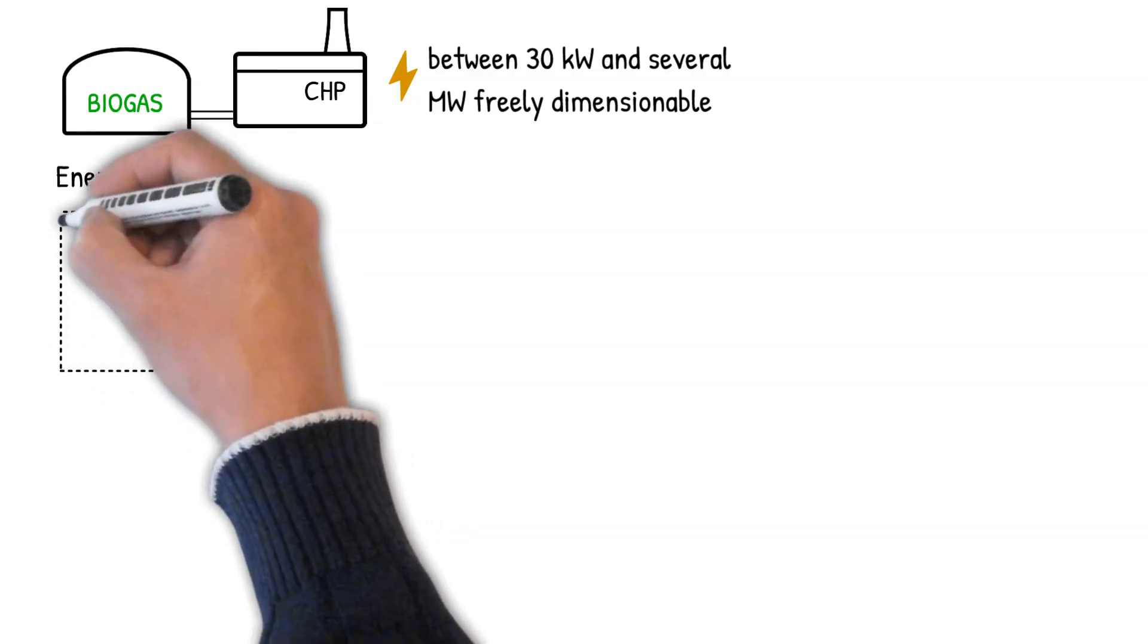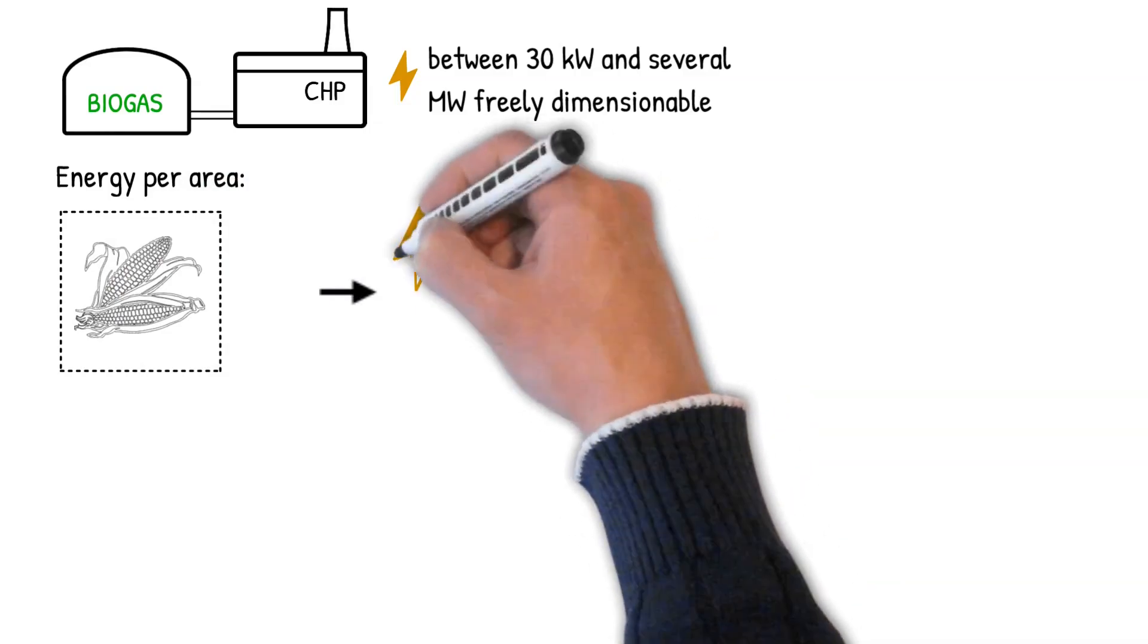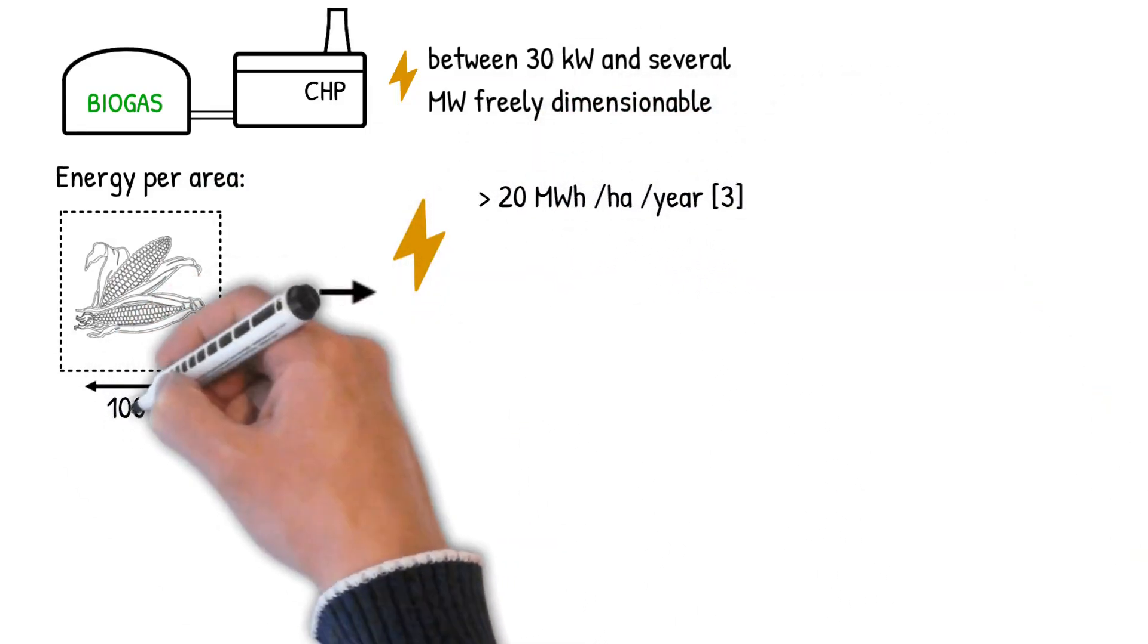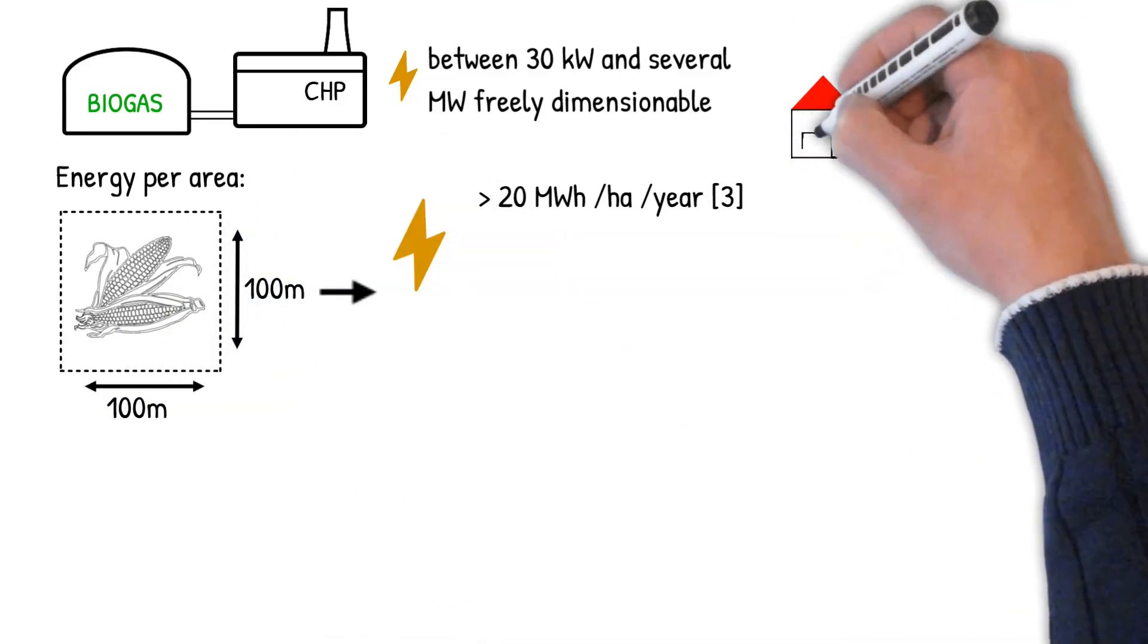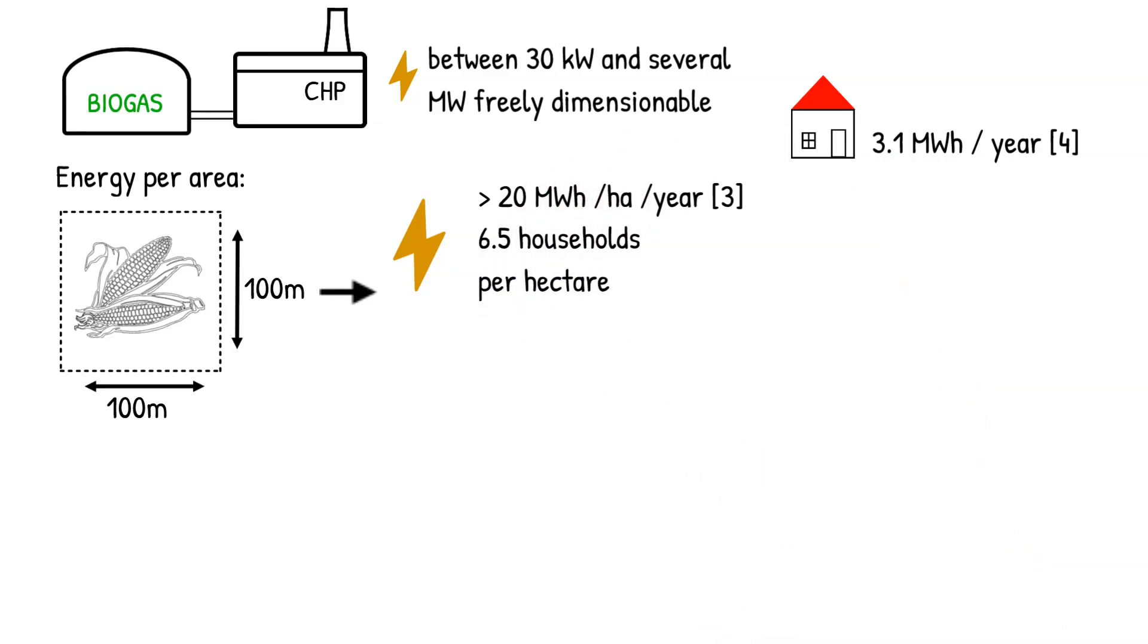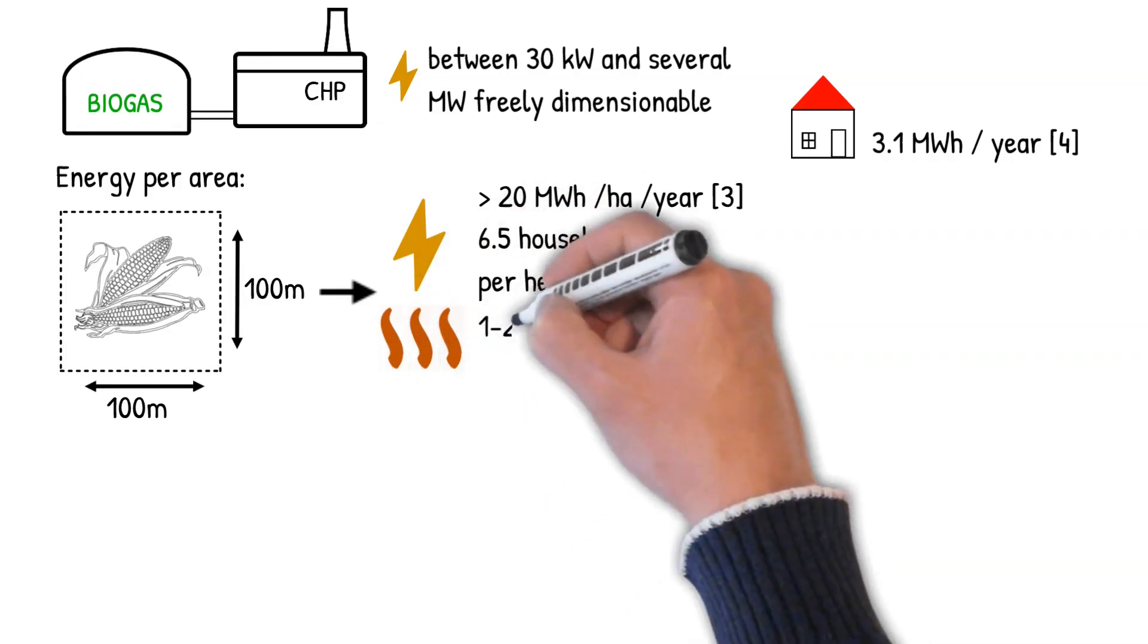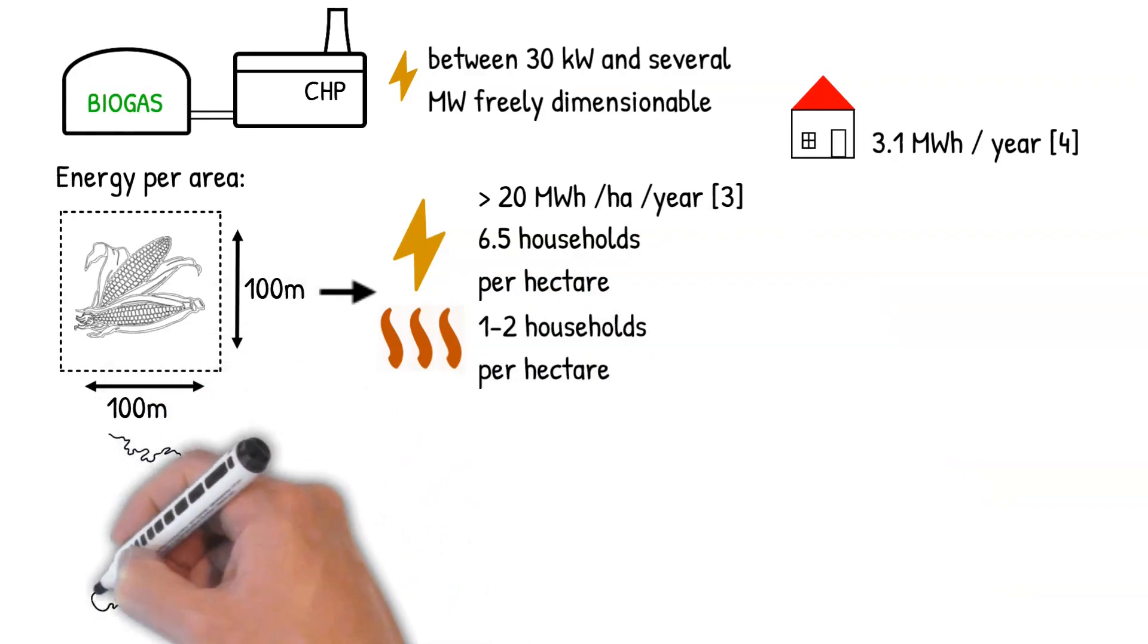With energy-rich crops such as corn, over 20 megawatt hours of electrical energy can be generated per year per hectare of land, an area of 100 times 100 meters. With an electricity consumption of about 3.1 megawatt hours per year per household in Germany, this means that about 6.5 households per hectare can be supplied with electricity. The generated heat can also supply 1 to 2 households with heat.